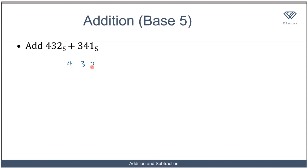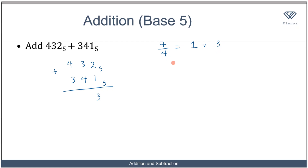Now let's look at another example in base five: 432 in base five plus 341 in base five. First: 2 plus 1 is 3, not greater than 4, so write 3 directly. Next: 3 plus 4 is 7 — greater than 4. Be careful to divide by the base — that's 7 divided by 5. One time with a remainder of 2. Write remainder 2, carry 1. (Correcting an earlier mistake of dividing by the wrong number.)